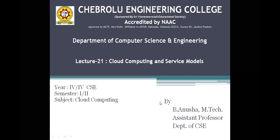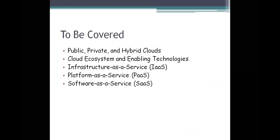Today we will see the first topic: cloud computing and service models. We will cover what a cloud is, the types of clouds, the differences between centralized and distributed clouds, and the networking structure used in data center networking. We'll also look at the cloud ecosystem, enabling technologies, and the services provided by the cloud — Infrastructure as a Service, Platform as a Service, and Software as a Service.